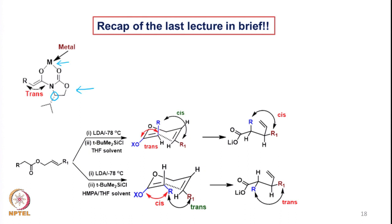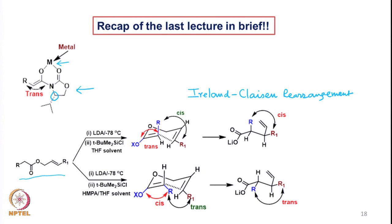Towards the end, we looked at the enol silyl ether formed from a substrate and what is known as the Ireland-Claisen rearrangement. I have taken up the Ireland-Claisen rearrangement first instead of the Claisen rearrangement because in the Ireland-Claisen rearrangement there is a very strong influence of the geometry of enolate formation. Therefore, I thought it was relevant to discuss it right along with this particular boron enolate path.